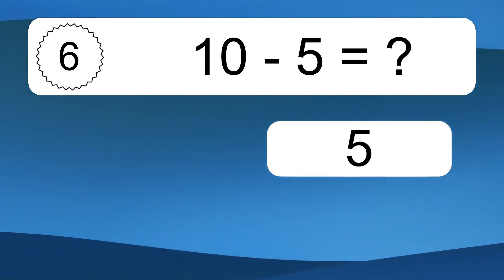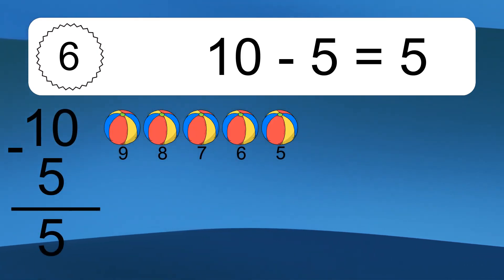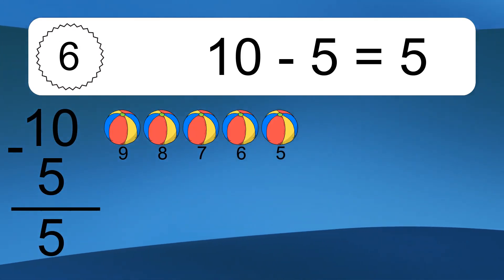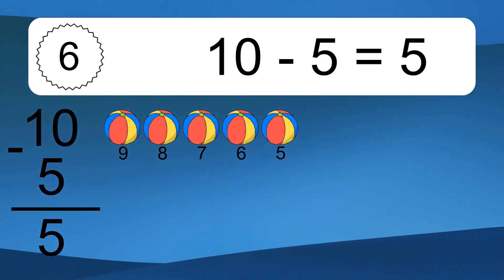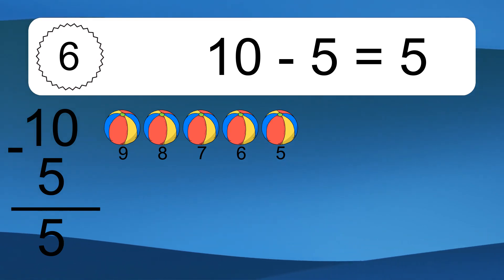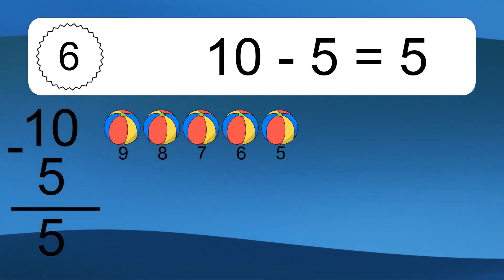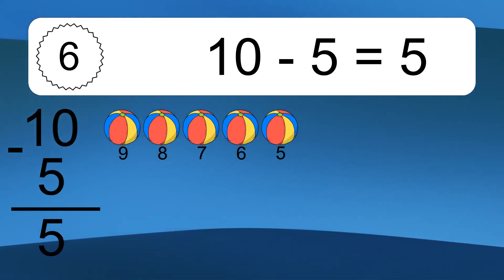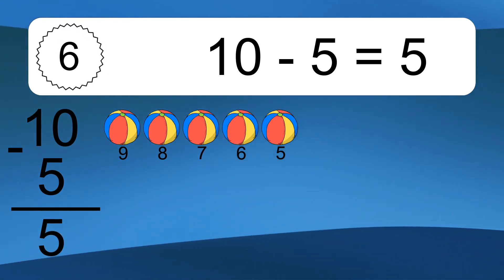10 minus 5 equals 5. Let's count it: 9, 8, 7, 6, 5.